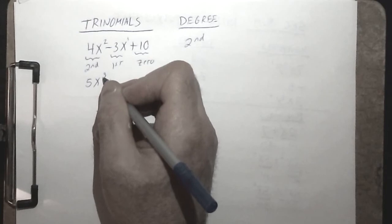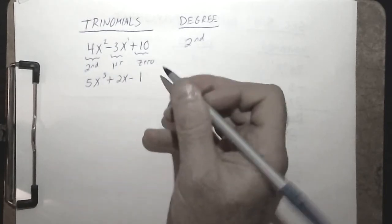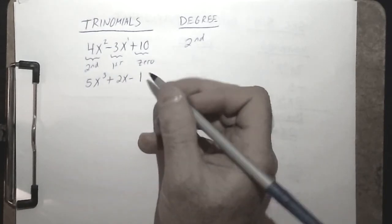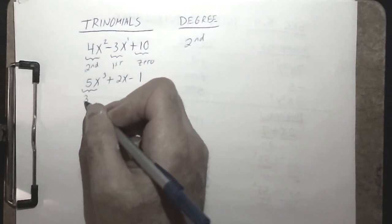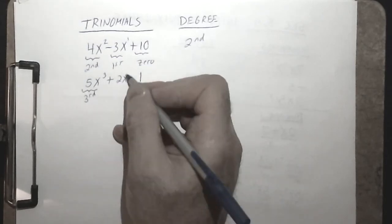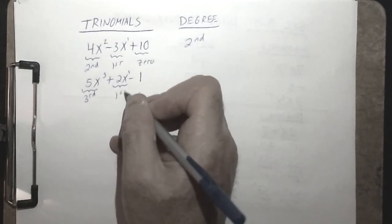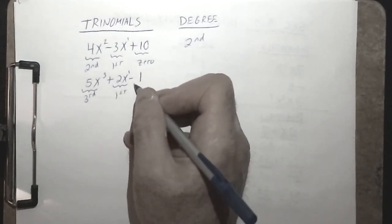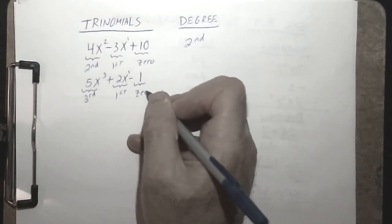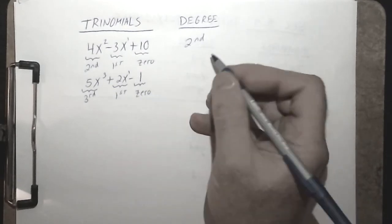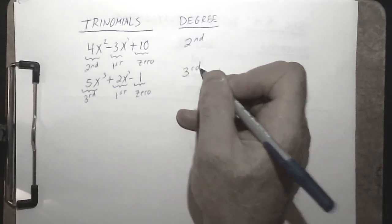Another trinomial: 5x³ + 2x − 1. This is a trinomial — the first term is of the third degree, the second term is a first-degree term, and the last term being a constant is of degree 0. So the degree of this trinomial would be a third-degree trinomial.